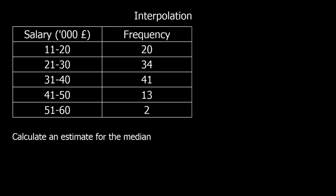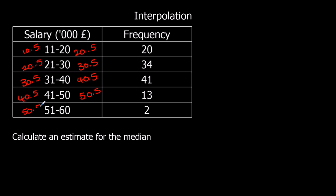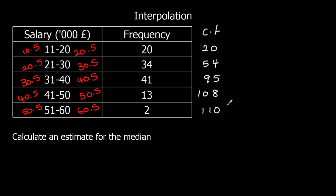Here we've got another question — again we're going to find an estimate for the median. We've got grouped data again with gaps between our groups, so we need to change them to eliminate the gaps, taking the lower bound of the lower and the upper bound of the upper. All the class widths are 10 this time. We add the cumulative frequency column: 20, plus 34, plus 41, plus 13, plus 2 — giving 110 in total. For the median, we halve it to get the 55th value.